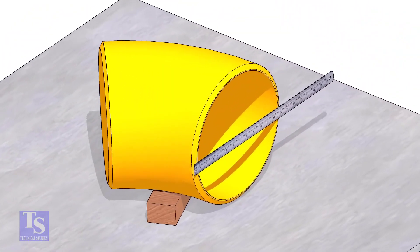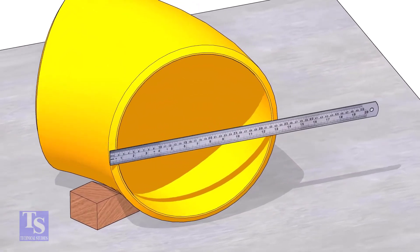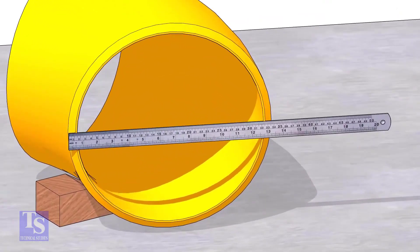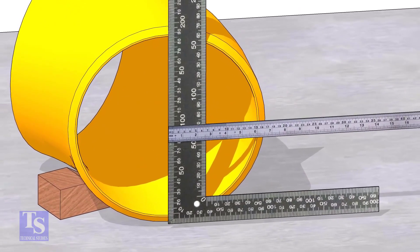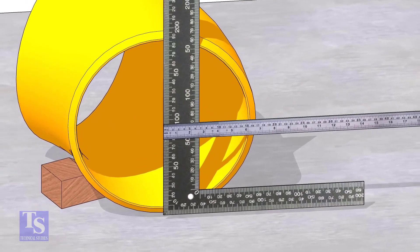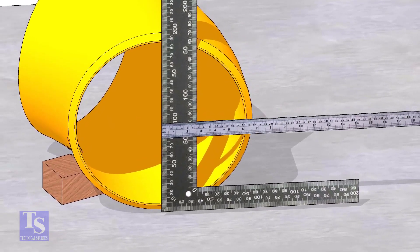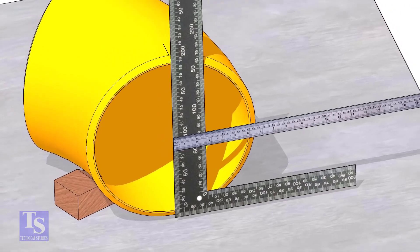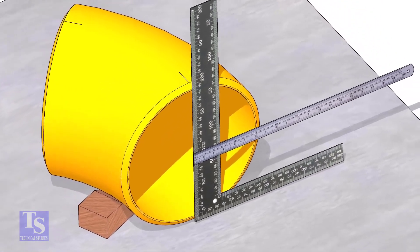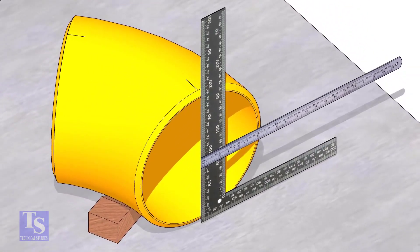Measure the OD. Put a right angle at the middle of one face of the elbow. Make sure the edge of the right angle is exactly at the center. Draw a line where the right angle edge touches the elbow face on the top and bottom side.